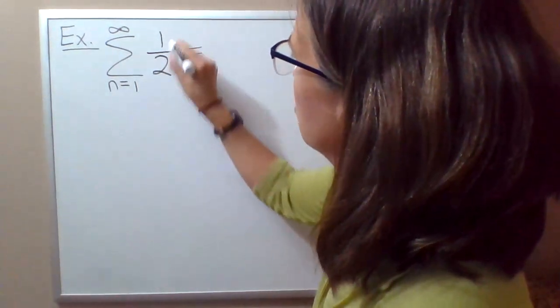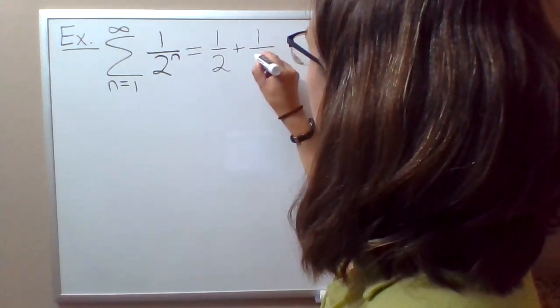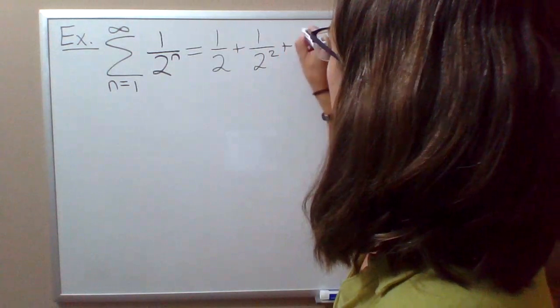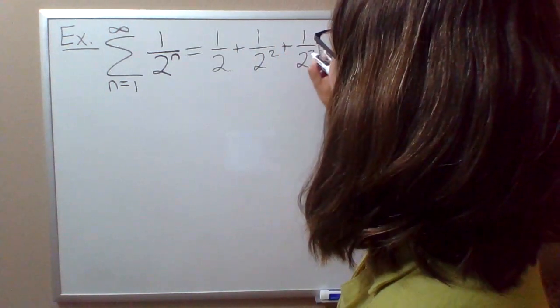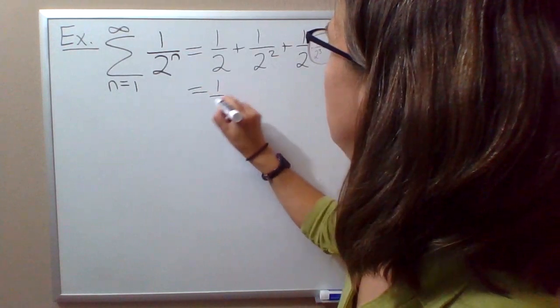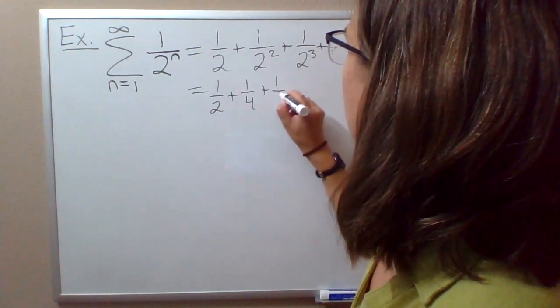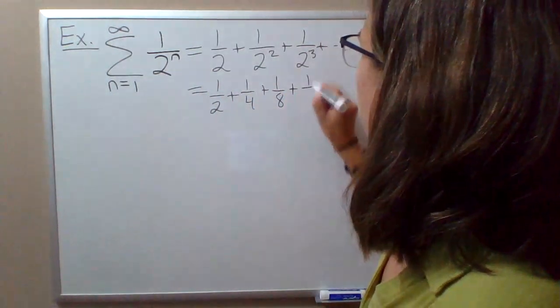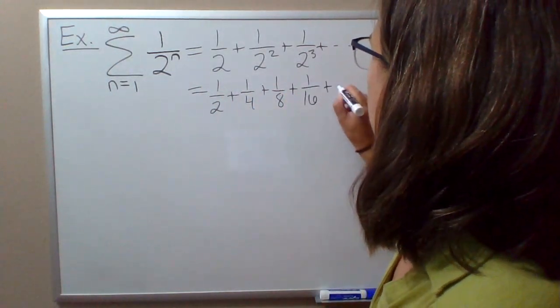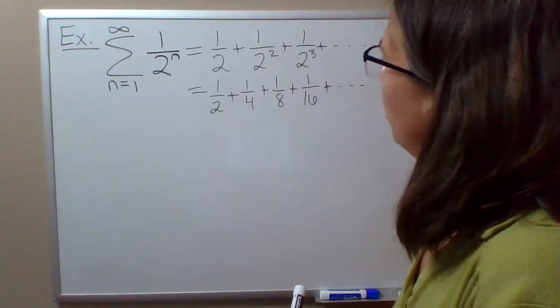Plus 1 over 2 to the third and so on. So this would be 1 half plus 1 fourth plus 1 eighth. 1 over 2 to the fourth would be 1/16, and so on from there.